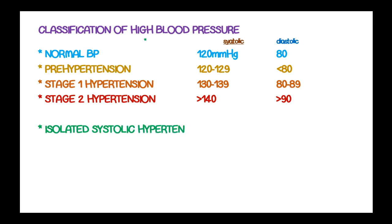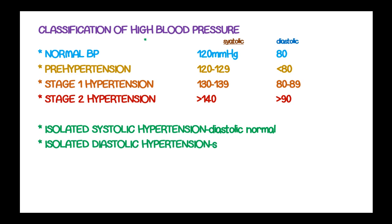Normally the systolic and diastolic blood pressure are elevated concurrently, but sometimes systolic blood pressure can be elevated while there is no elevated diastolic blood pressure — that is called isolated systolic hypertension. And when the diastolic blood pressure is elevated but there is no elevated systolic blood pressure, that is called isolated diastolic hypertension.